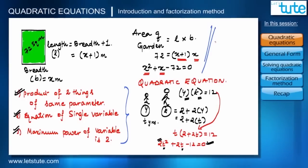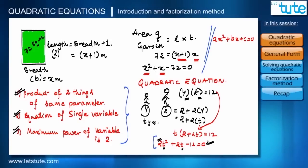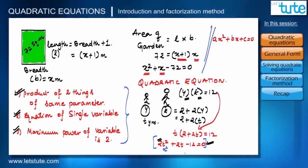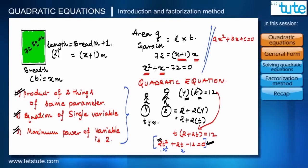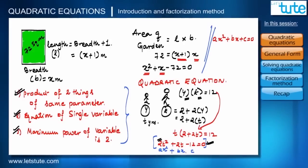A quadratic equation is generally written as ax² + bx + c = 0. Any quadratic equation can be written in this form. For the brothers' equation 2t² + 2t − 12 = 0, the variable is t instead of x. Here a = 2, b = 2, and c = −12.